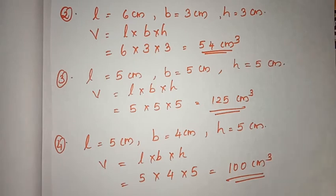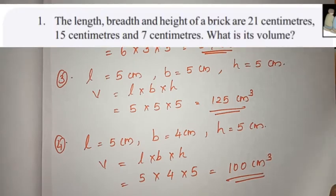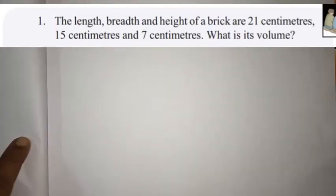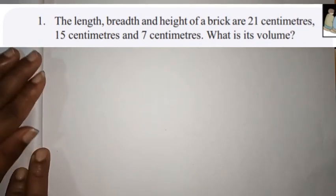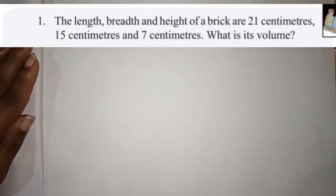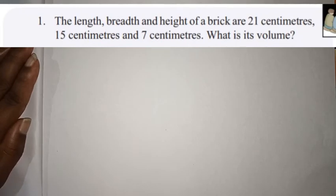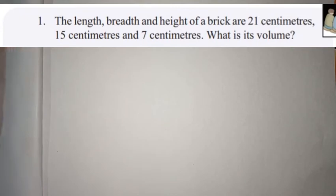Page number 65. We have two questions. What is the volume? The length, breadth and height of a brick are 21 cm, 15 cm and 7 cm. What is its volume?